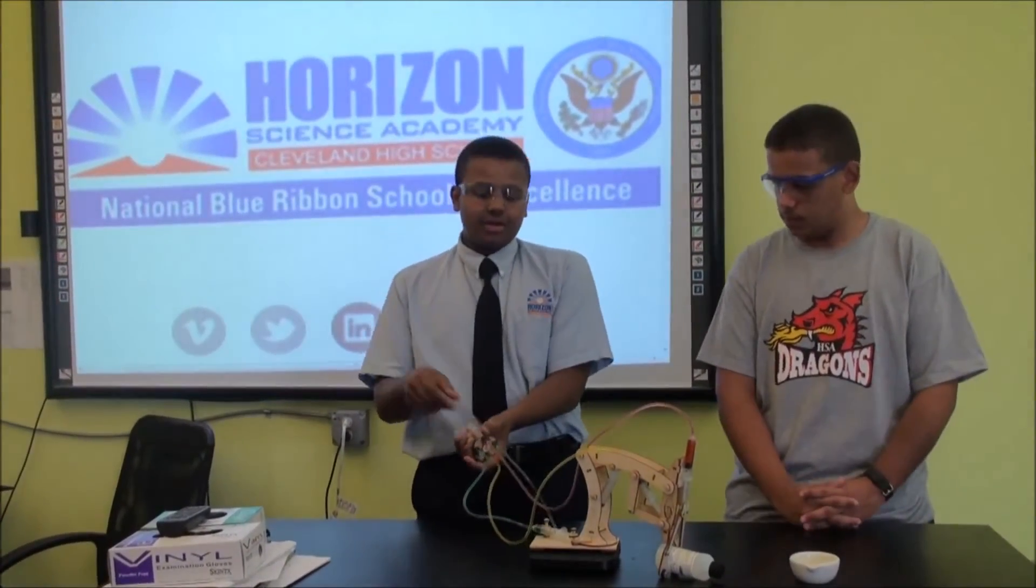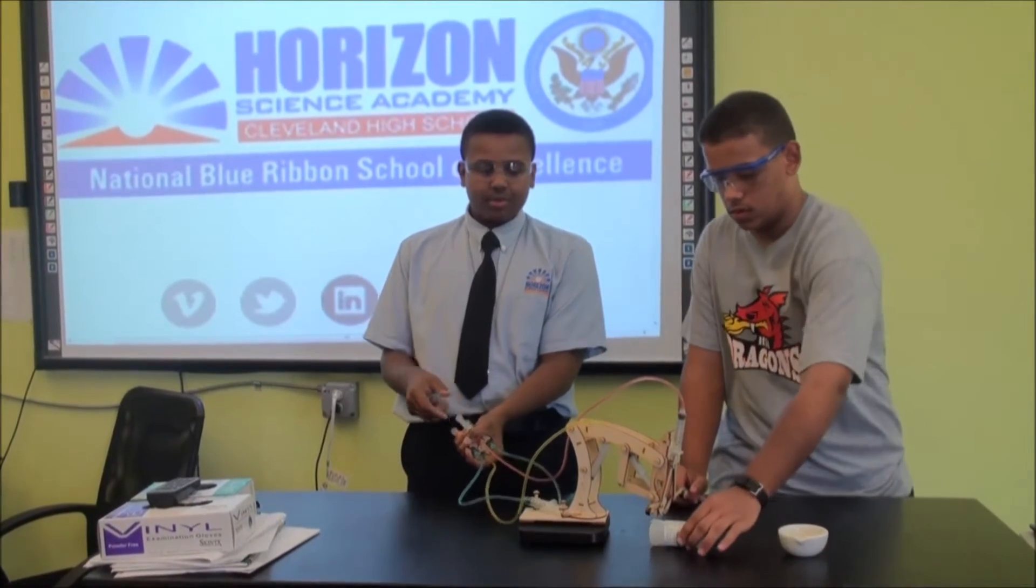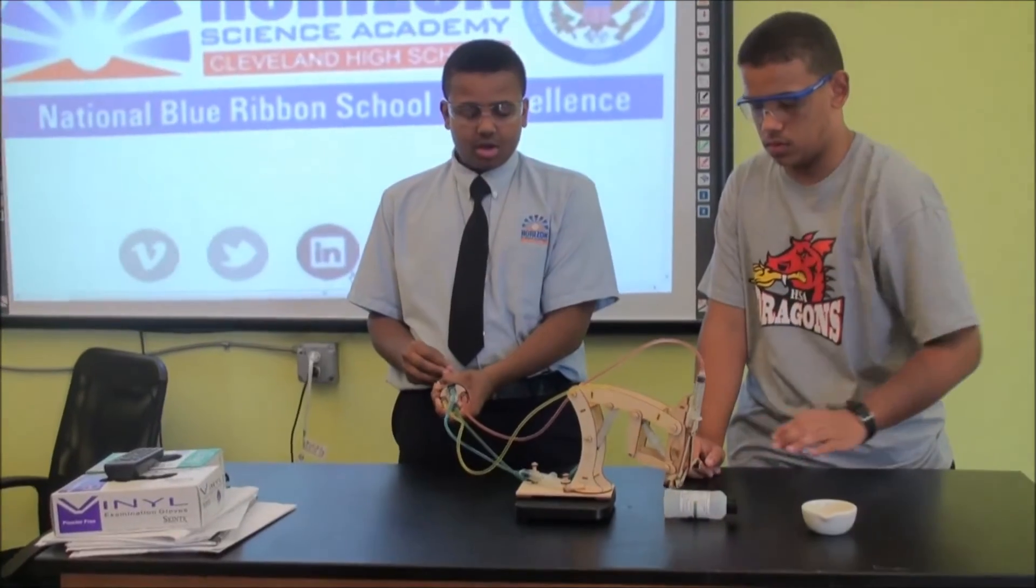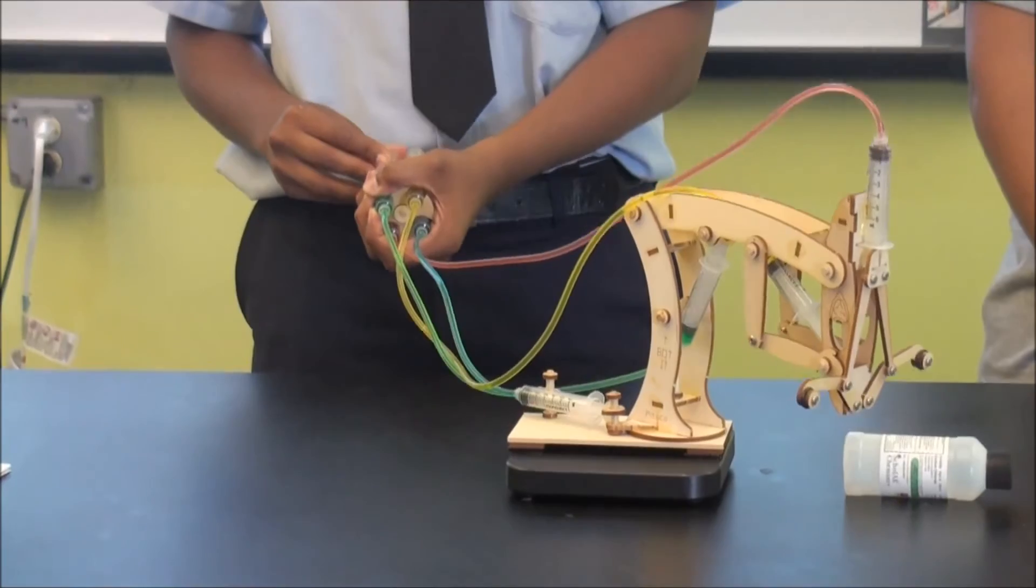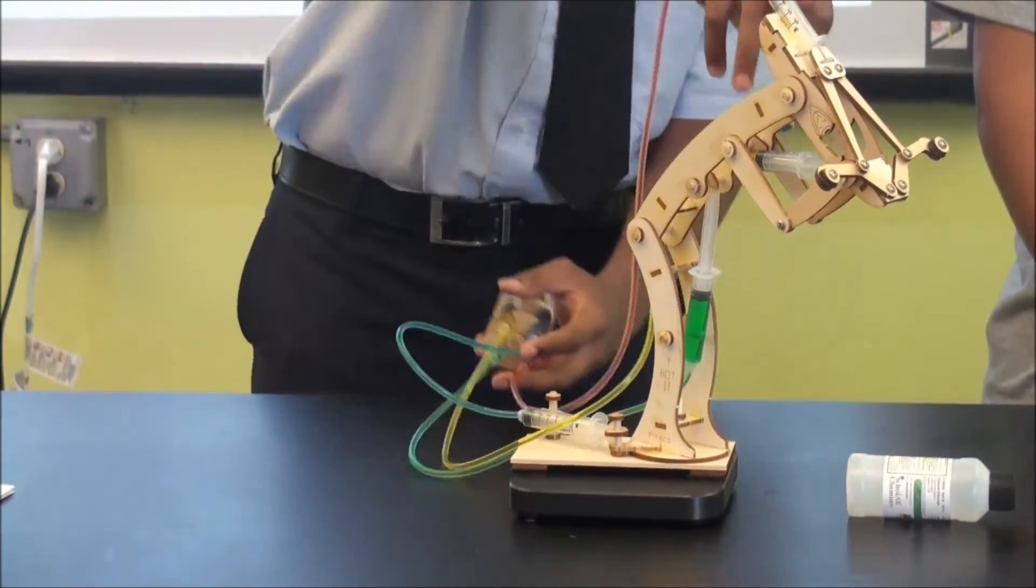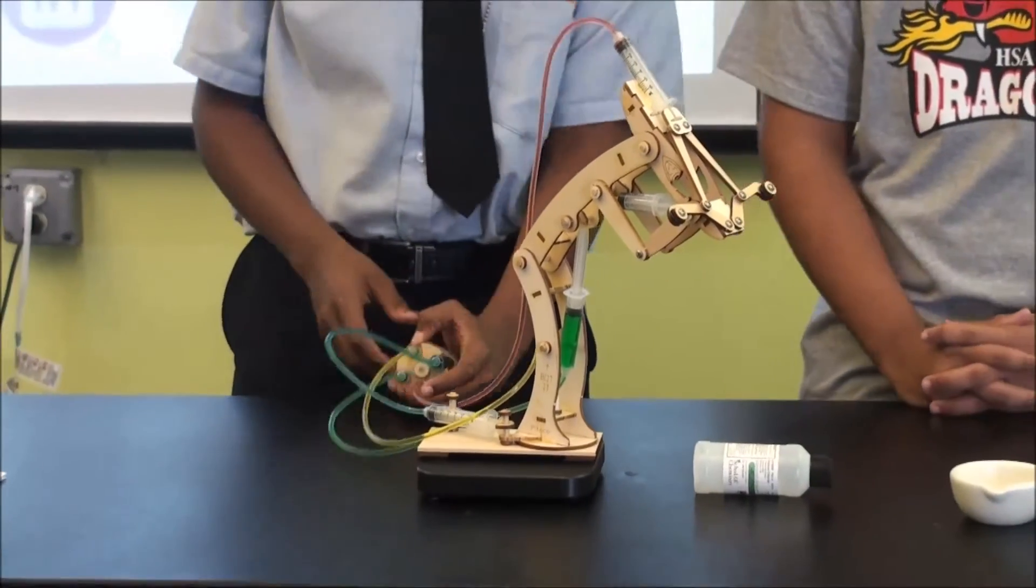First, we have different color coding. Red opens the arm completely. Yellow moves it from side to side. You have one that pushes it up. The syringes act like hydraulics.